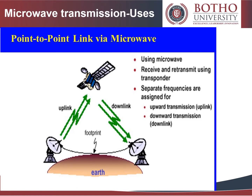Microwaves are widely used for point-to-point communications because their small wavelength allows conveniently sized antennas to direct them in narrow beams pointed directly at the receiving antenna. This allows nearby microwave equipment to use the same frequencies without interfering with each other, unlike lower frequency radio waves. The high frequency of microwaves gives the microwave band a very large information-carrying capacity — a bandwidth 30 times that of all the rest of the radio spectrum below it. A disadvantage is that microwaves are limited to line-of-sight propagation and cannot pass around hills or mountains as low frequency radio waves can.